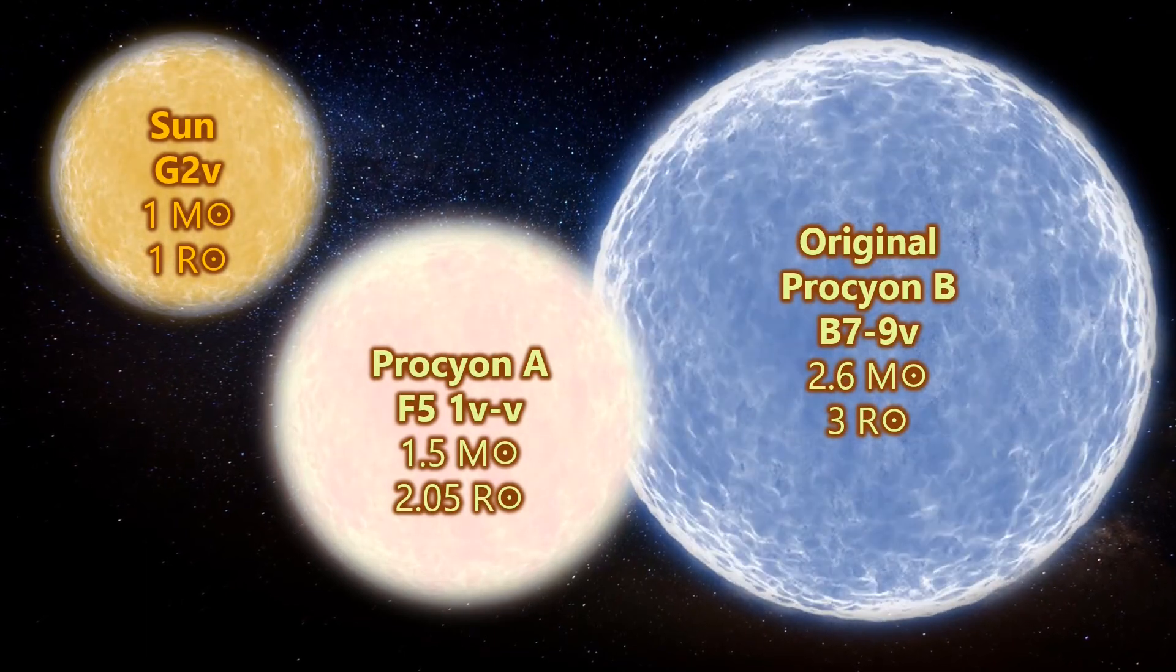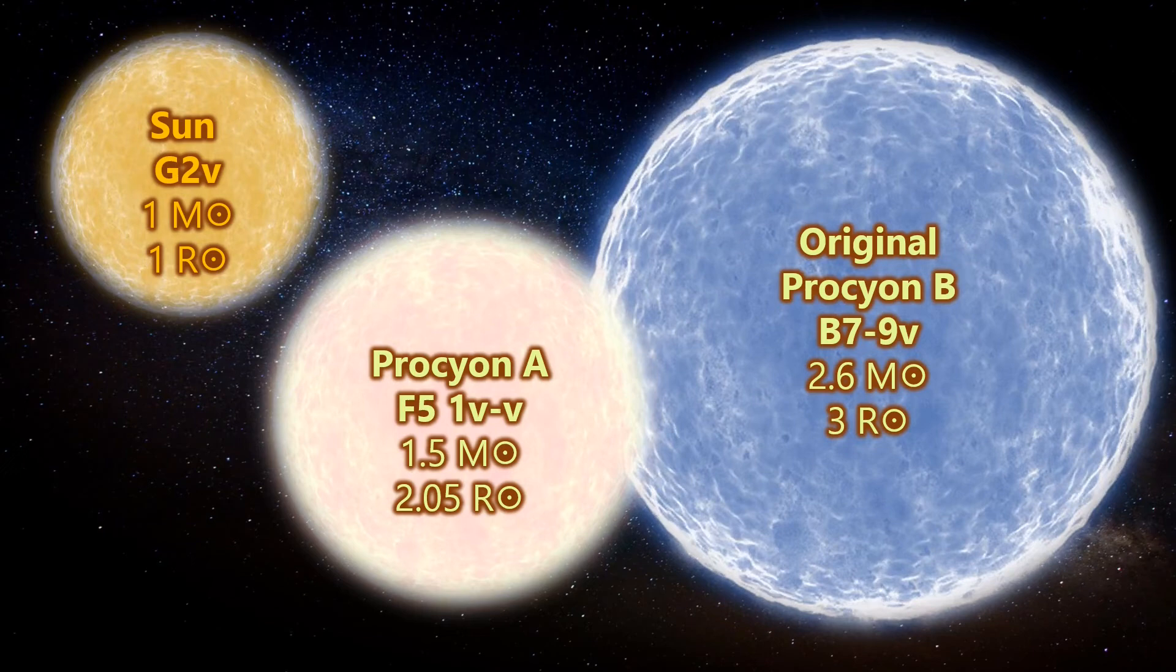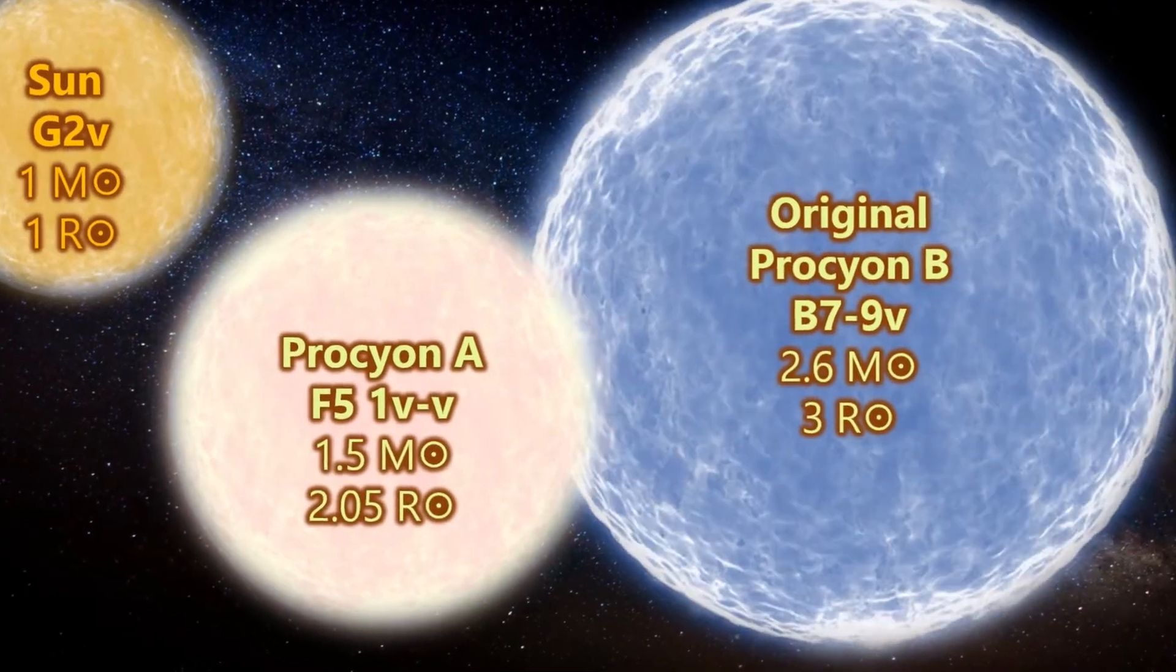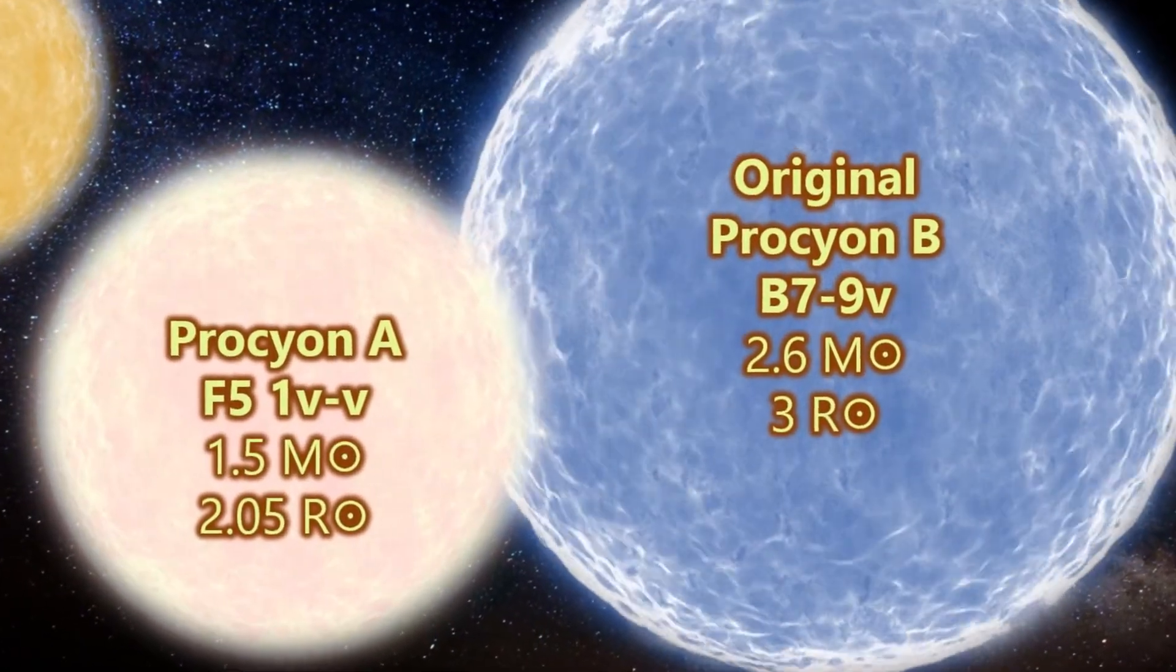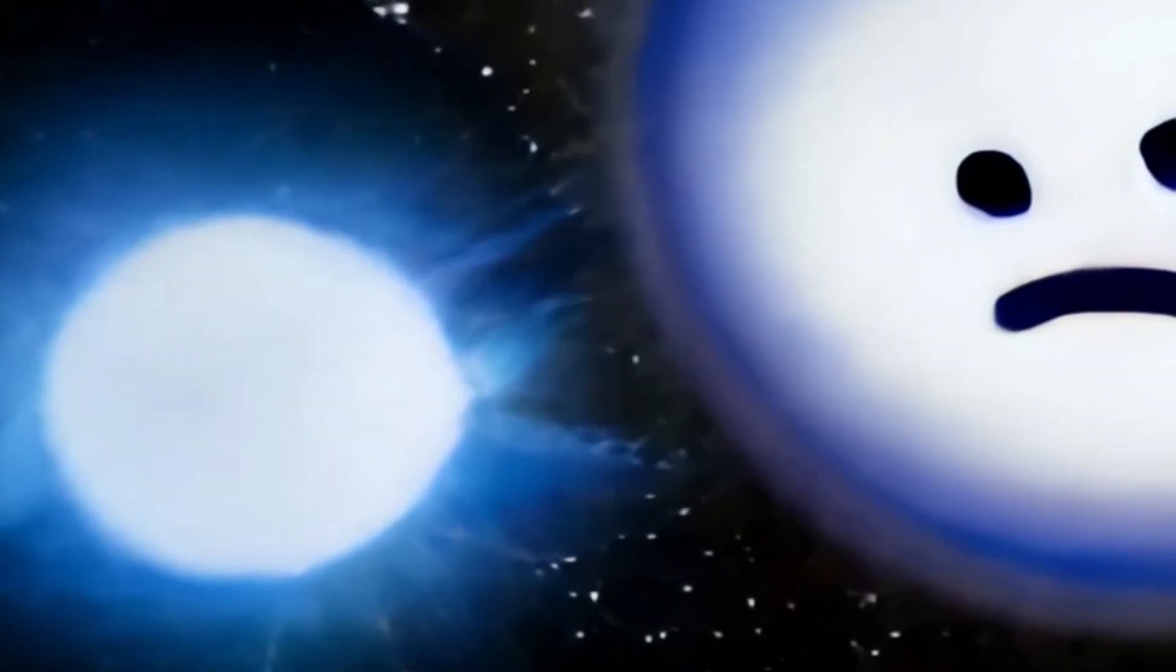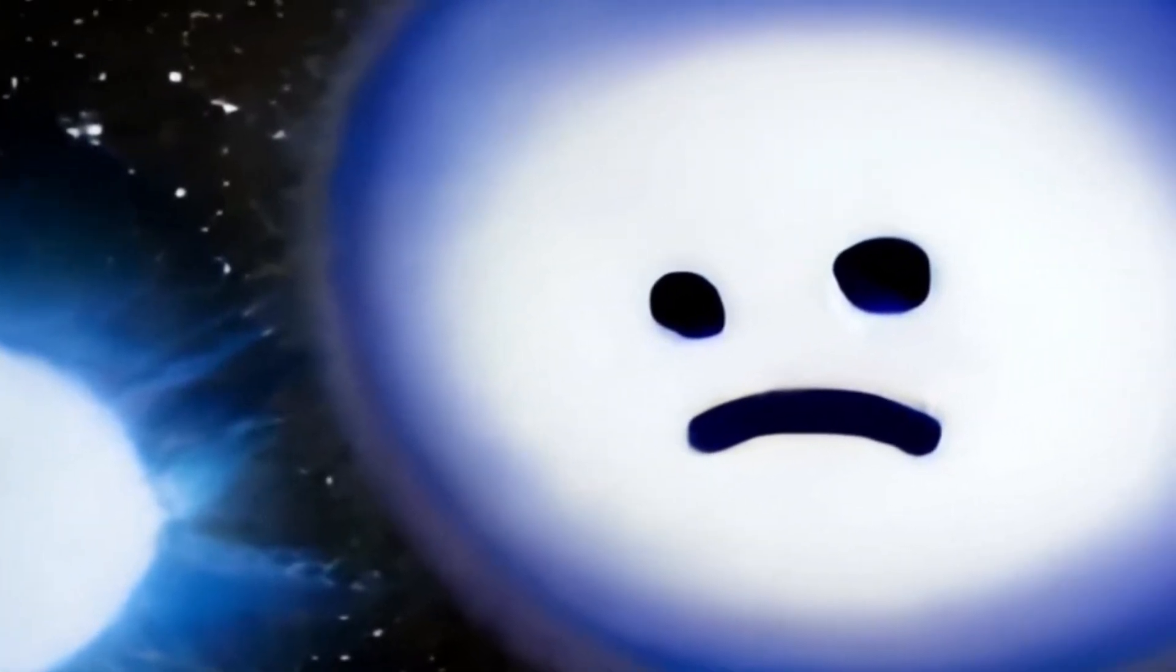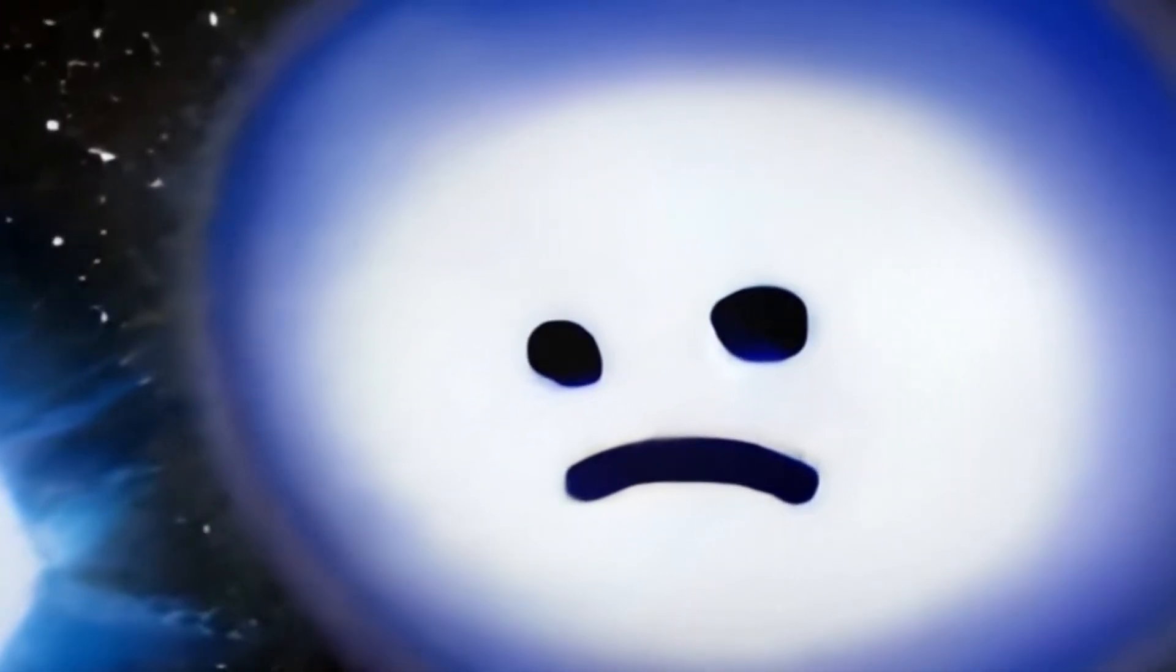The mass of the progenitor or original star for Procyon B would have been around 2.6 solar masses, so it would have been larger than Procyon A at the time. I find this fascinating as once upon a time the A star would have been the dimmer of the two and it would have been a very impressive system, and it's likely any possibilities of life or probably planets in the system are slim to none.